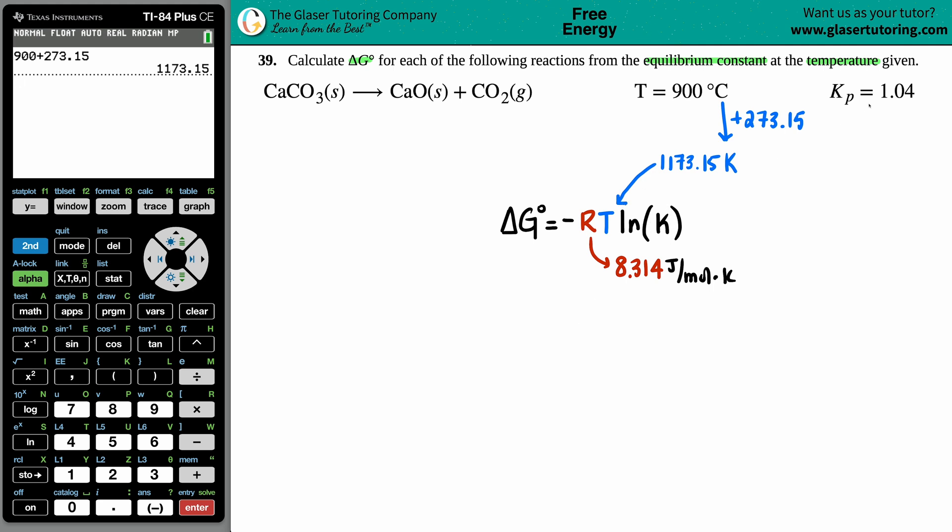They already gave me the K value. Specifically they gave me a Kp. I don't care what K it is, there's so many of them - Kp, Kc, Keq, Ka, Kb, Ksp - it's just an equilibrium constant, so you can use it. This one is 1.04.